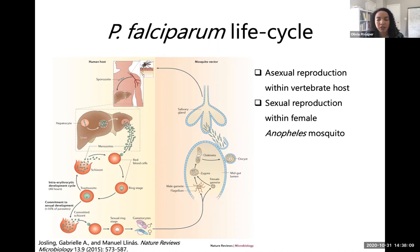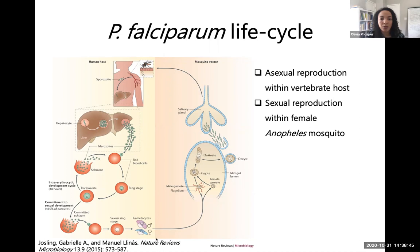Mosquitoes are infectious when they have parasites in their salivary glands—when taking a blood meal from a human, they can inject parasites into the human. Asexual reproduction happens inside the vertebrate host, and sexual reproduction happens inside the mosquito. After asexual parasites differentiate into male and female gametocytes inside the human, the human becomes infectious to mosquitoes. The mosquito ingests gametocytes, sexual reproduction occurs, and the parasite undergoes zygote, ookinete, oocyst, and sporozoite stages.